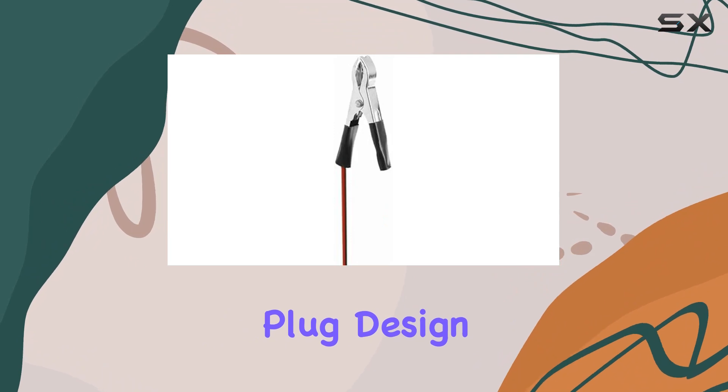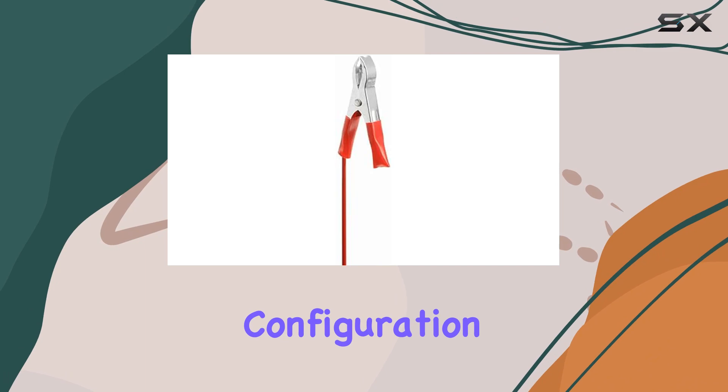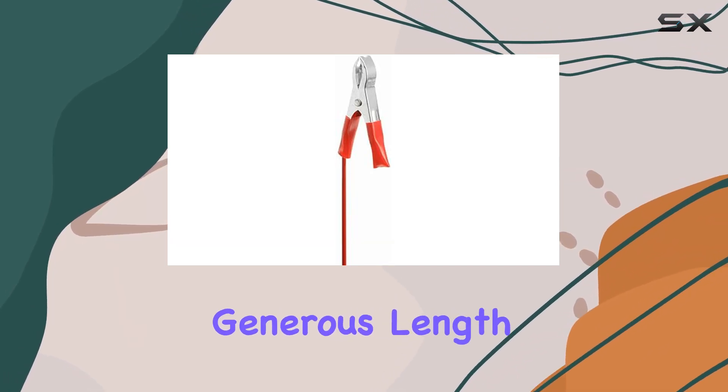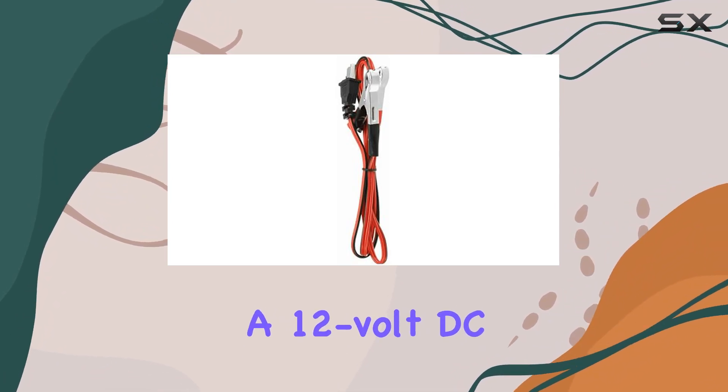Now what caught my attention is the T-shaped plug design. It's versatile, making it compatible with various generators that accept this configuration. Plus, with a generous length of 1.2 meters, you've got plenty of reach to connect your generator to a 12-volt DC battery without any hassle.